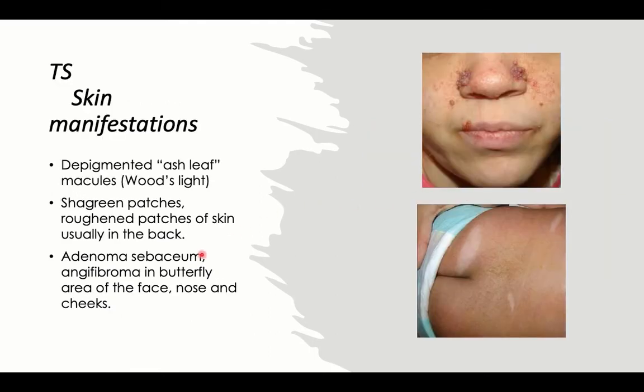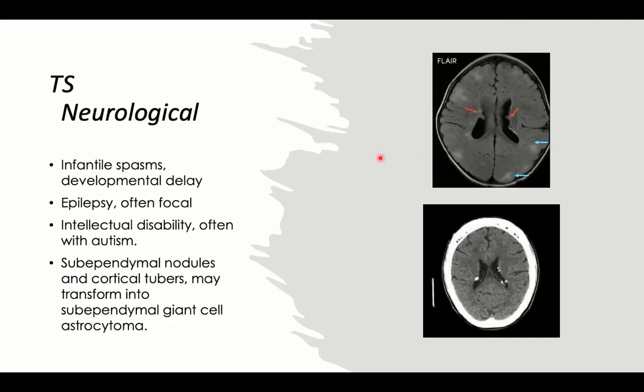Then we have adenoma sebaceum, which is an angiofibroma present in the butterfly area of the face — the nose and cheeks. These lesions increase attention for a neurocutaneous syndrome: ash leaf macules, shagreen patches, and adenoma sebaceum.